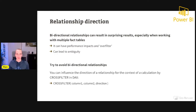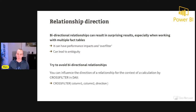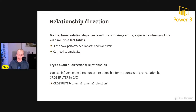If you want to avoid bidirectional relationships, you can always consider using the CROSSFILTER function in DAX. If for one specific calculation you need to filter from the many side to the one side — opposite to the relationship direction — you can change it on the fly using CROSSFILTER. This changes the filter direction only for that calculation without changing the actual relationship. Please use CROSSFILTER in these scenarios and avoid changing the relationship direction in general.